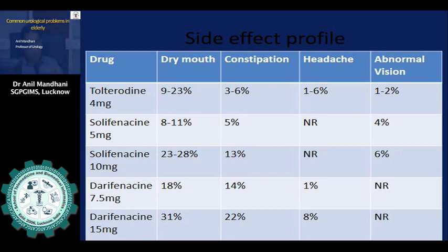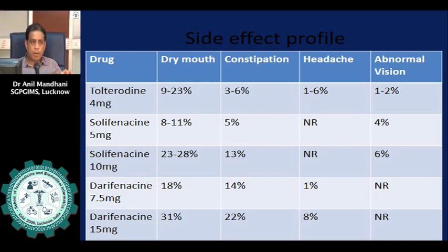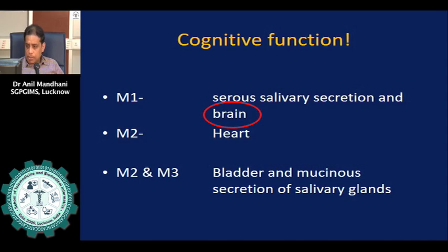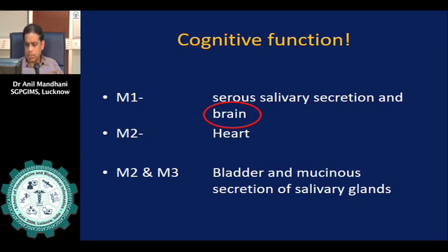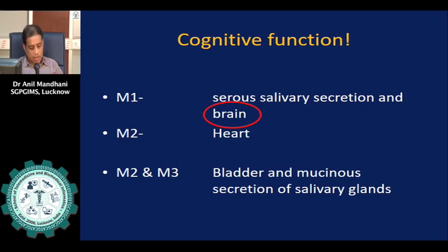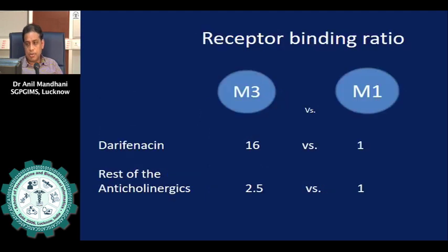The bladder diary is a very important tool — patients should fill it to record total fluid intake. It is an important part of evaluating a female with urinary leak. Basic laboratory tests are the same as already discussed. Urodynamic study may be needed if initial medical treatment fails. Regarding anticholinergic drugs for overactive bladder: bladder contraction is a parasympathomimetic function, and drugs blocking acetylcholine act on M1, M2, and M3 receptors. The bladder has mainly M2 and M3 receptors; the brain has M1 receptors. Most anticholinergics affect all receptors, causing side effects on salivary glands, brain, and heart.